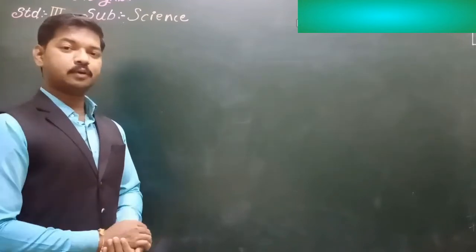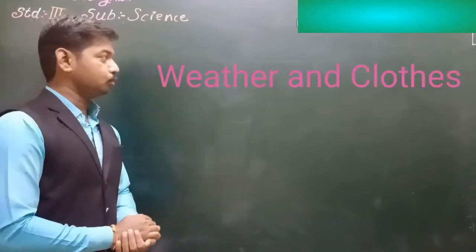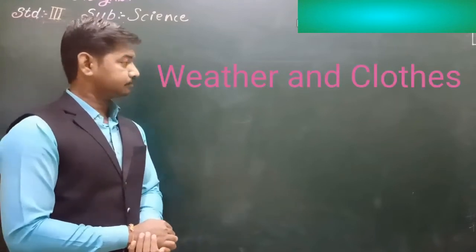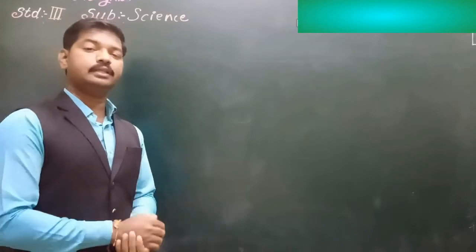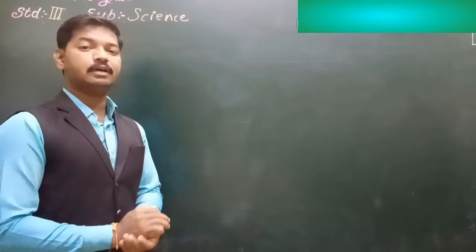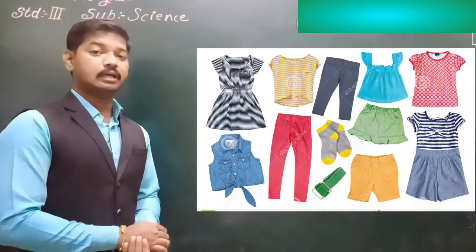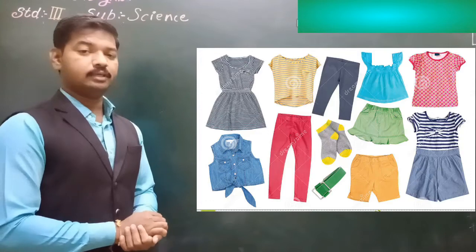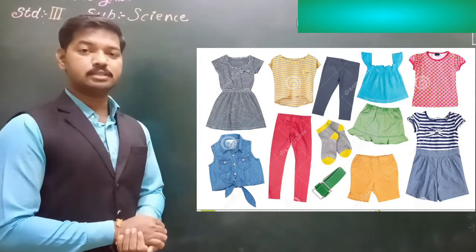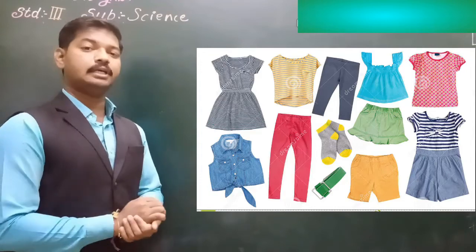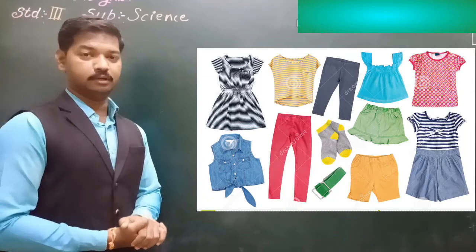Now the next point we are going to see is clothes according to weather. We wear clothes according to the weather of the place where we live. We wear light-colored cotton clothes during summer because these cotton clothes allow our body heat to escape and keep our body cool.